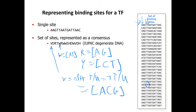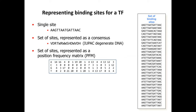People have come up with more complex models based on something called a position frequency matrix (PFM). To create a PFM from a set of binding sites, for each column in your aligned binding sites you simply count the number of times you see each base. So you count C, G, T, A at each position. Column four, which is always T, would show 21 counts for T. Column five, which is T all but one time, would show 20 T's and 1 A, and so on.